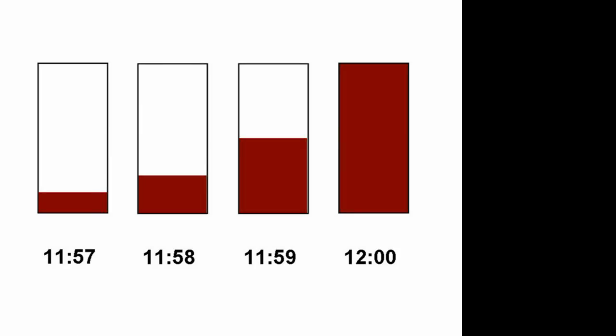Now let's consider some bacteria in a jar — they grow exponentially. These bacteria have a doubling time of one minute. We stick one bacterium in the jar at 11 o'clock, and the jar fills up at 12 o'clock. So what time was it when the jar was half full? Because the doubling time is one minute, the answer is 11:59. At 11:58 it was a quarter full, and at 11:57 it was one eighth full.